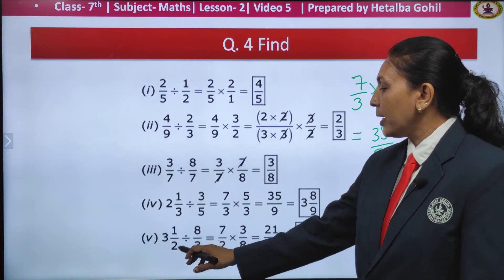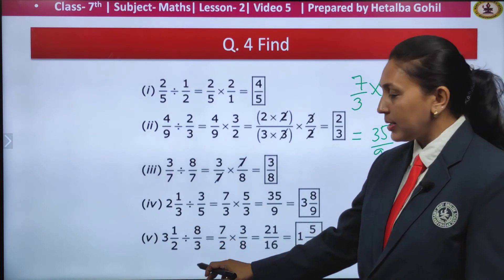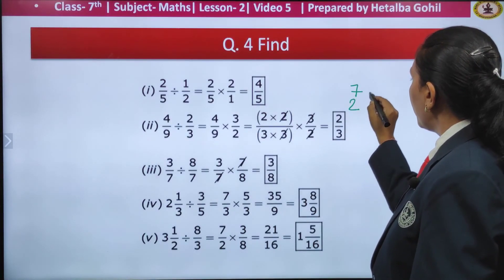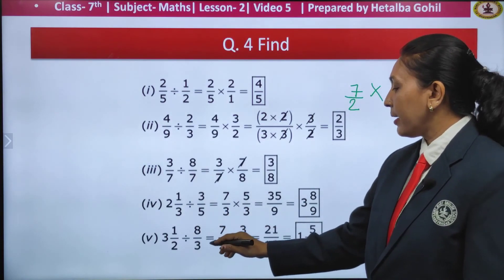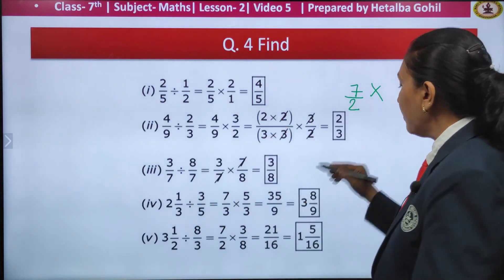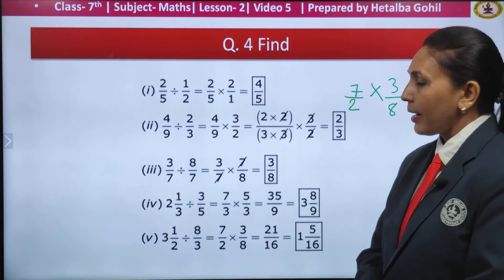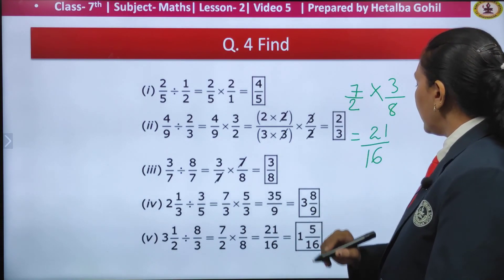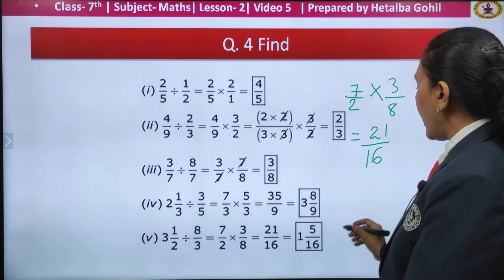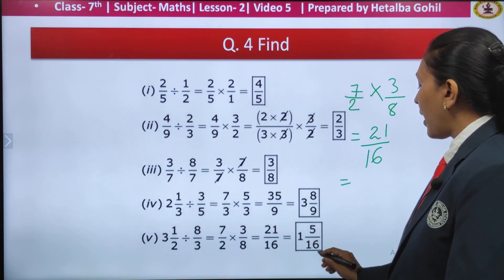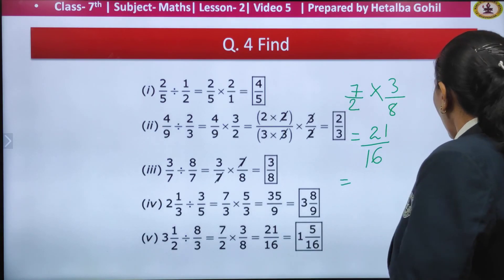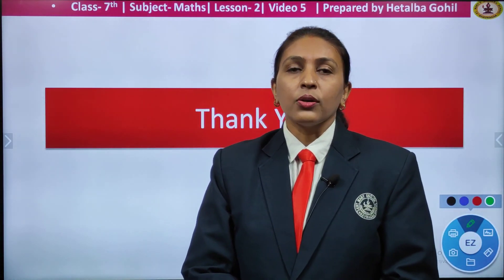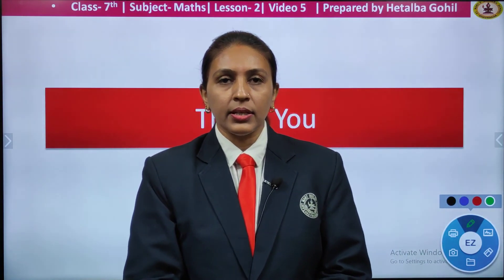One more: 3 and 1 upon 2 divided by 8 by 3. Converting into improper fraction, we get 7 by 2 multiplied by 8 by 3. When we make the reciprocal, it will become 3 by 8. I cannot cut any of the numbers, so multiplying the numerators I get 21 by 16. Changing into a mixed fraction, I get 1 and 5 upon 16 as my answer. With this, we end this part — hope you understood, go through the video well. I will see you in the next lecture, bye bye.